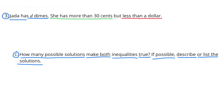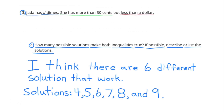Part C: How many possible solutions make both inequalities true? If possible, describe or list the solutions. There are 6 different solutions that work. The solutions are 4, 5, 6, 7, 8, and 9.